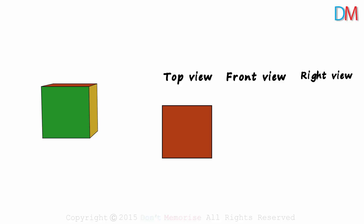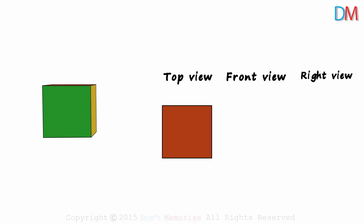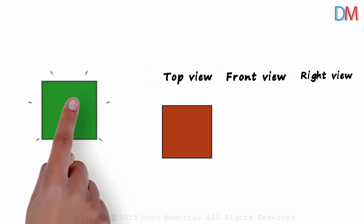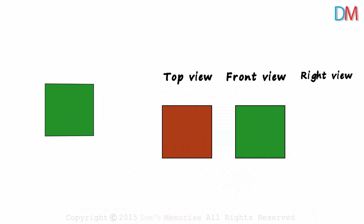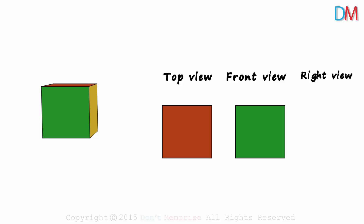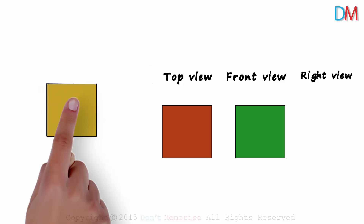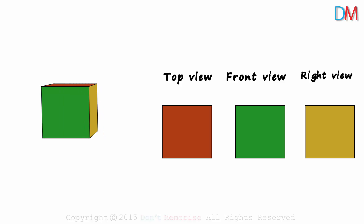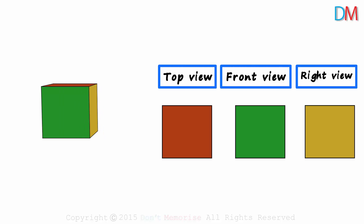How would the cube look if we view it from the front? We would see just the front face, which is also a square. The front view is also a square. And how would it look if we view it from the side? A square again. Whether we look at it from the top view, the front view, or the right view, we will always see a square.